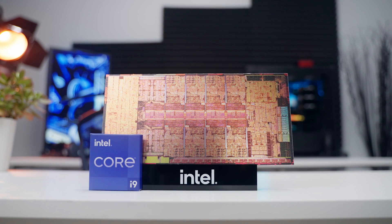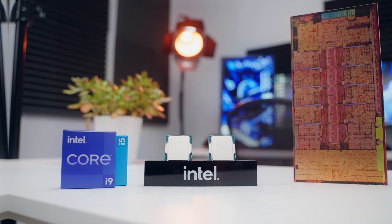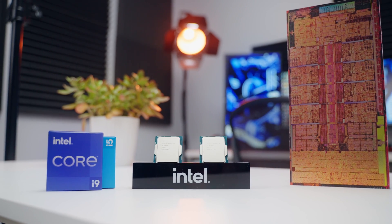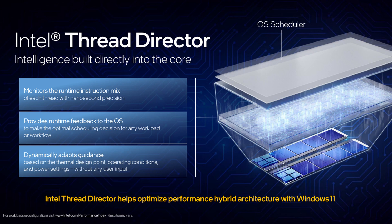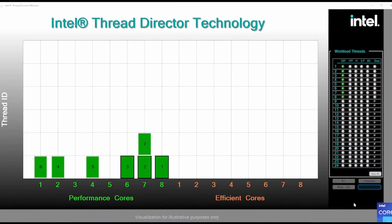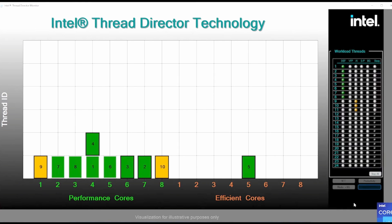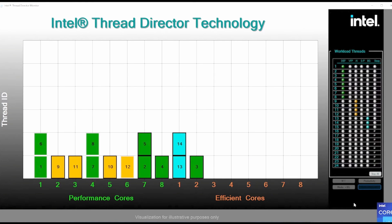E-Cores on the other hand are designed to handle highly threaded workloads. Ideally these should be working on background tasks so the P-Cores can focus on the big important stuff. But how do all these cores know which tasks to focus on? That's where Intel's Thread Director technology comes in — using machine learning telemetry, they're able to predict workloads with nanosecond precision and provide this feedback to the operating system scheduler that assigns the task to a specific core.